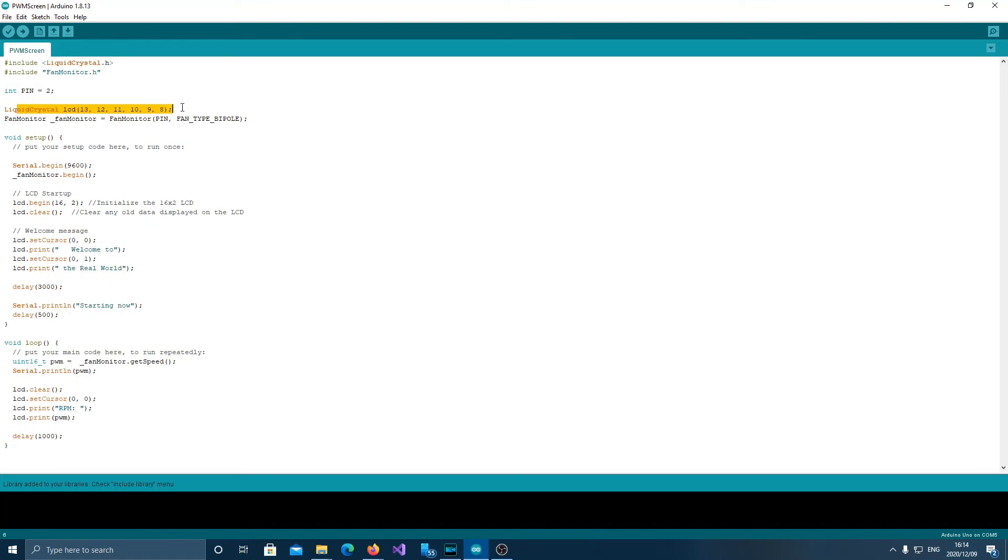This is just to set up the liquid crystal display. This is just setting up the fan monitor to tell it what pin to use and what type of fan it expects on the other end. In your setup method, I just set up the serial. You also just start the fan monitor library. Very simple. This is all really just LCD stuff to display messages.